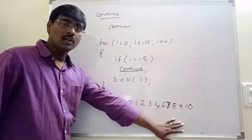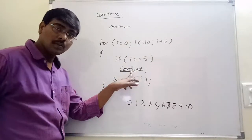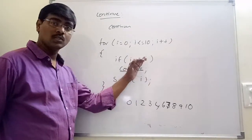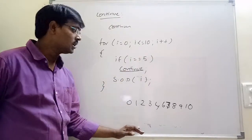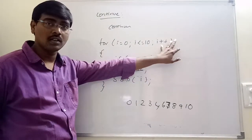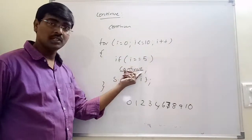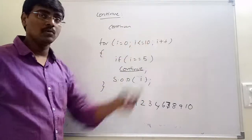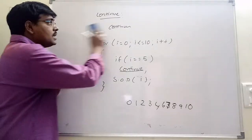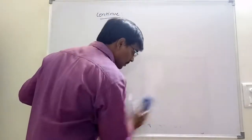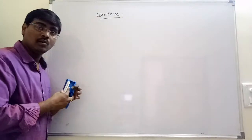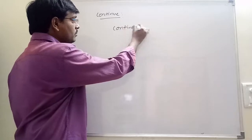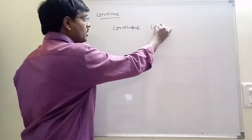If you use break instead of continue, the output is simply 0, 1, 2, 3, 4 — because break exits the loop entirely and no further iterations execute. Continue means only the present iteration is skipped and control moves to the next iteration. Similar to break, continue also supports labeled loops — continue with some label.